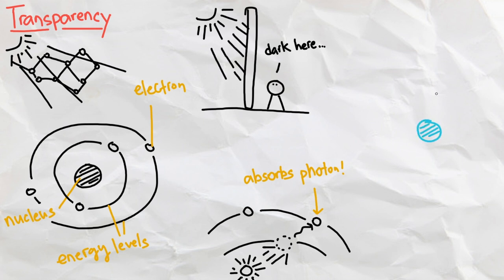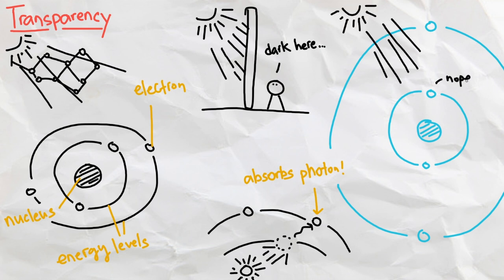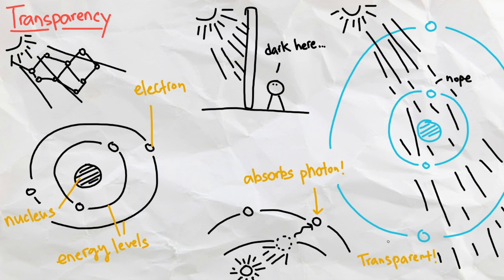However, in the case of glass molecules, because of their specific arrangement, the electron energy levels are very spread out, meaning that the electrons need a lot more energy from the photons to jump levels, making the photons pass right through them instead, and therefore making glass transparent.